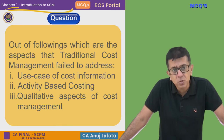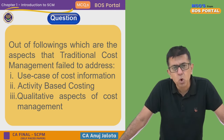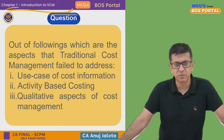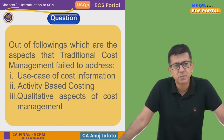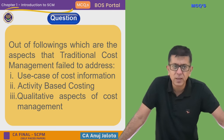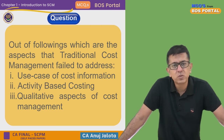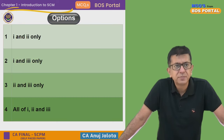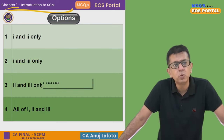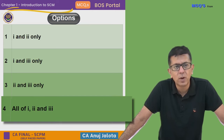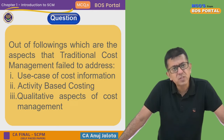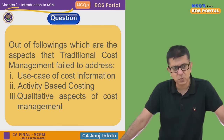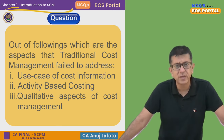Which are the issues that it fails to address? First: use of cost information — it does address this, it uses cost information to reduce cost. Second: activity-based costing. Third: qualitative aspects of cost management. The four options are: (1) one and two, (2) one and three, (3) two and three, (4) all of one, two and three. Traditional cost management addresses the first issue — it uses cost as a base for controlling cost.